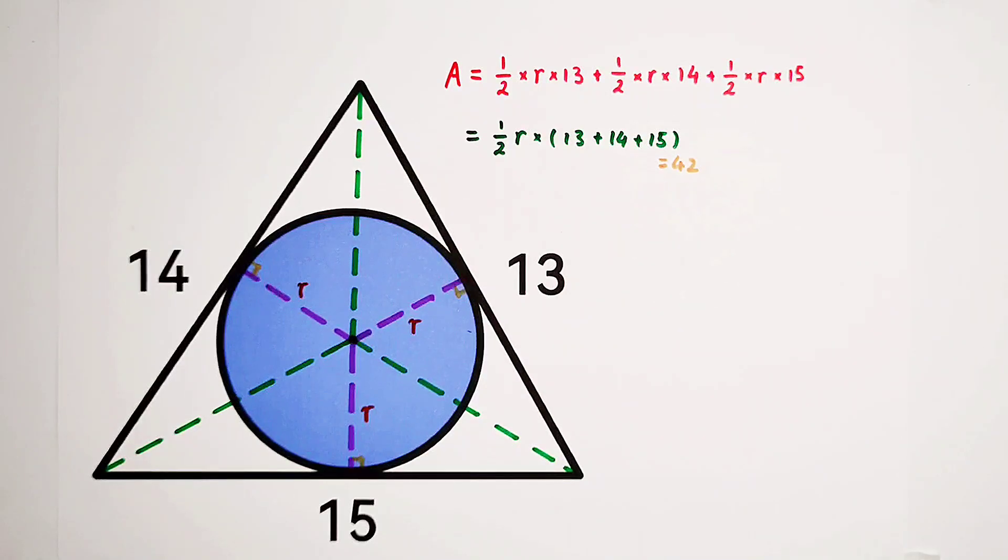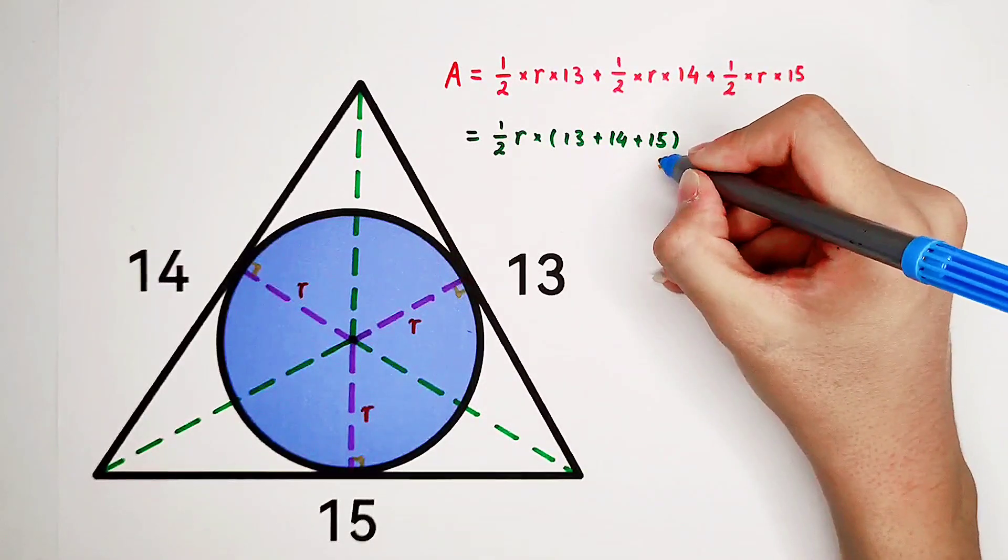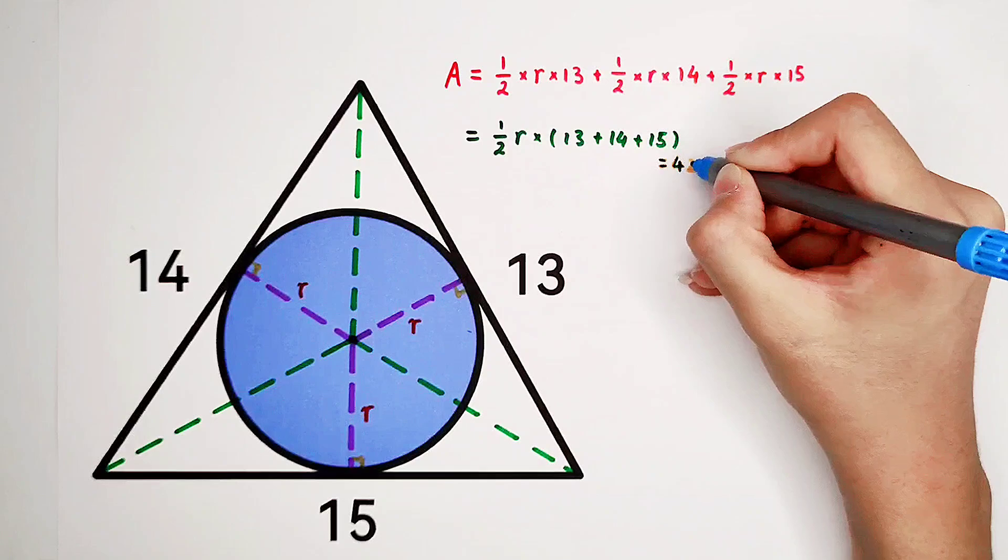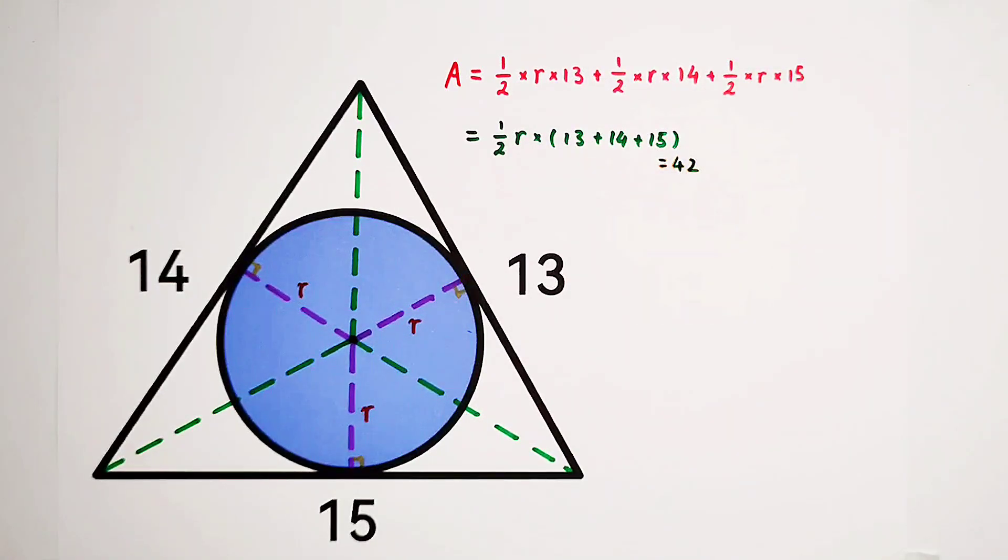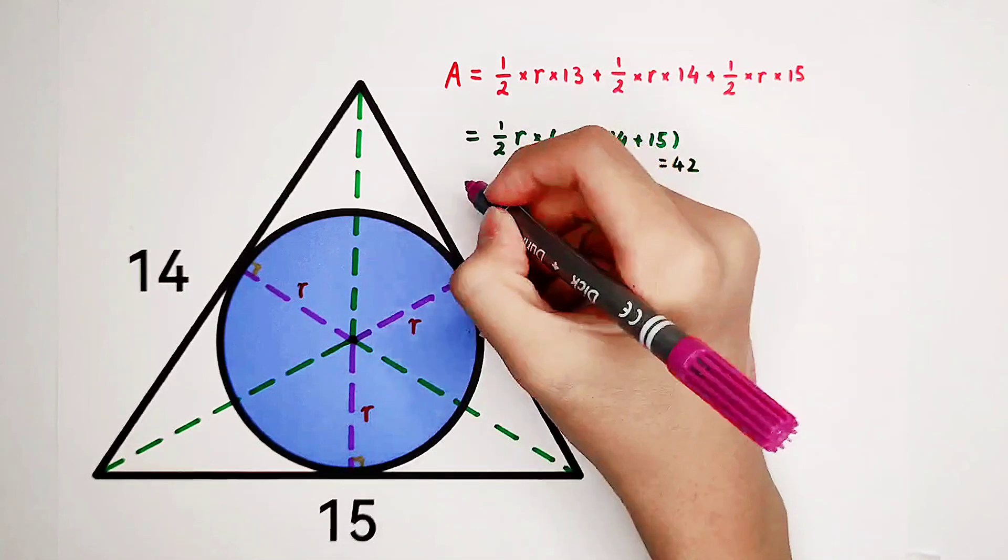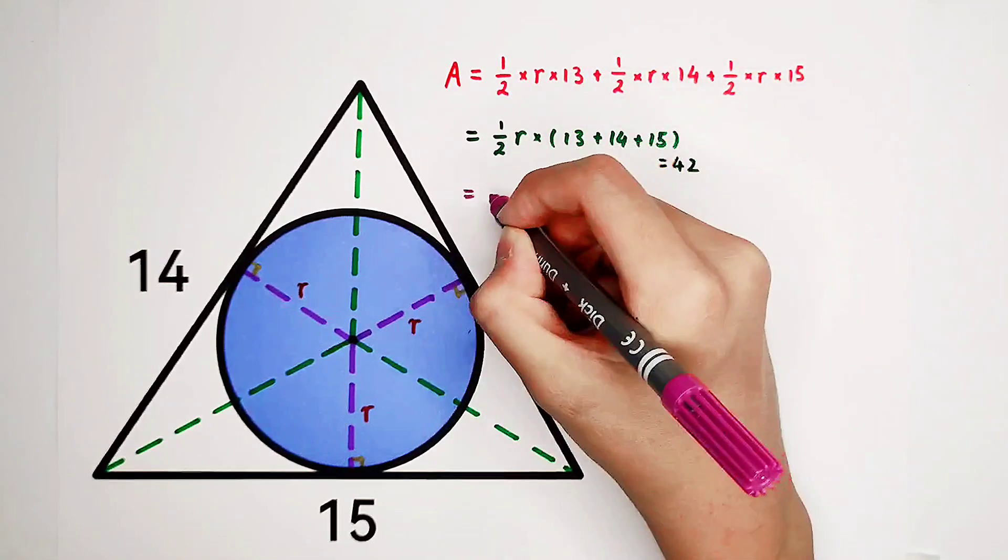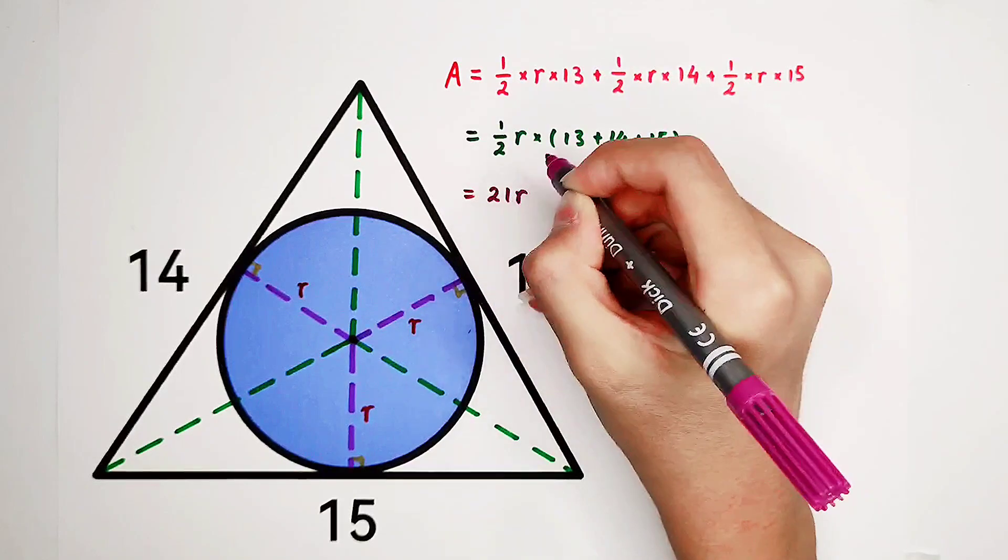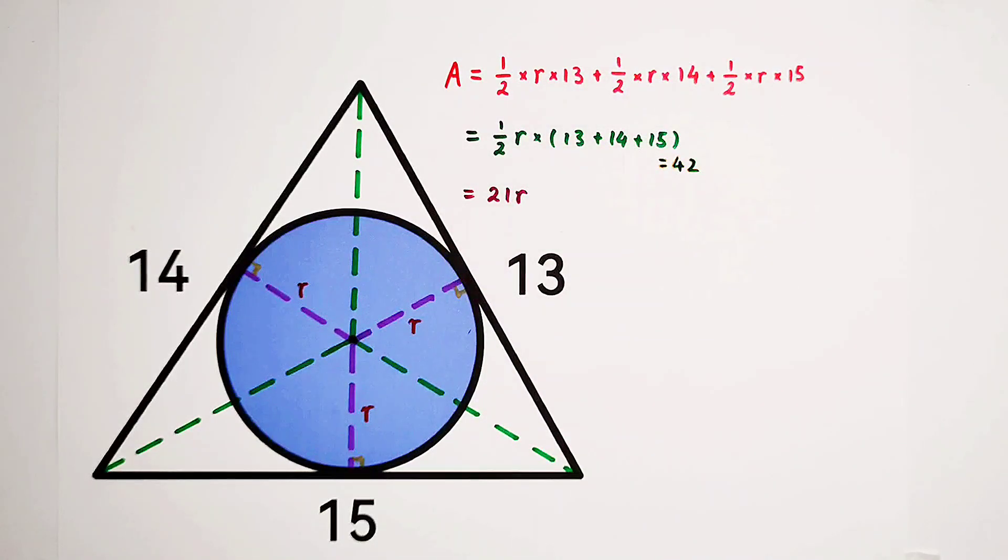Here we have times 1 over 2, so it's gonna be 21 times R. So the area is 21 times R.